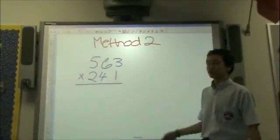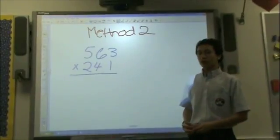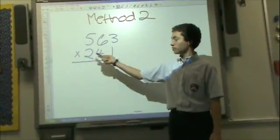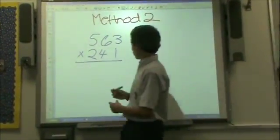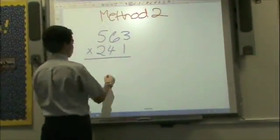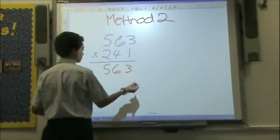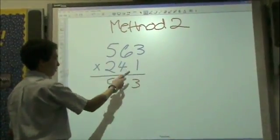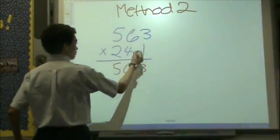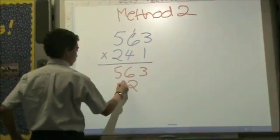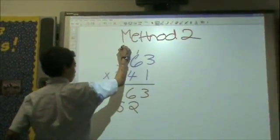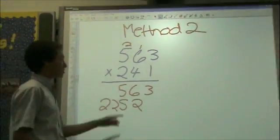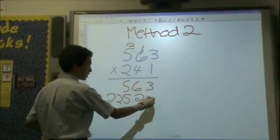Hello, my name is Joseph, and I'll be showing you Method 2. As in Method 1, you multiply each digit by each number based on what place they're in. So 1 times 563 would be 563. And then you do 4 times the same number again, and since it's in the tens place, there's an imaginary zero right here.